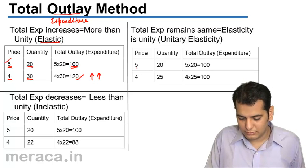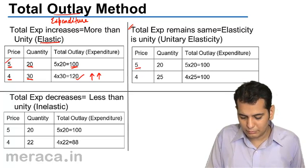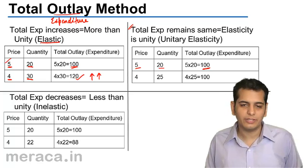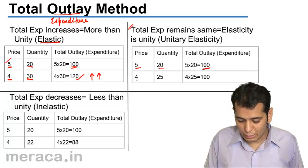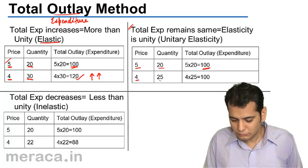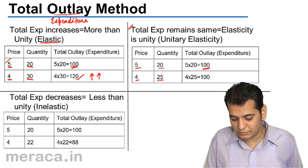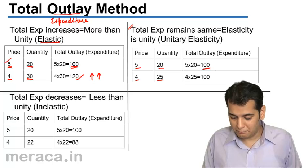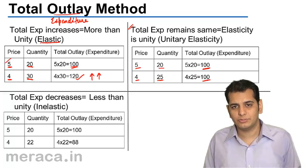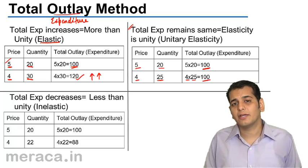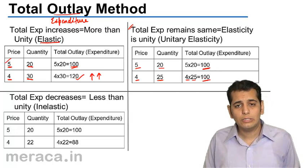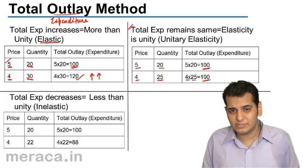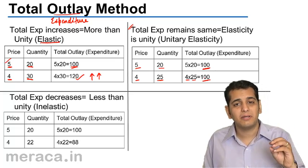Likewise, in this case the price is ₹5 and the quantity consumed at that price is 20, so my total outlay is 100. When the price reduces to ₹4, the quantity of consumption increases to 25. But if you closely observe, my total outlay remains unchanged — 4 × 25 = 100 again.